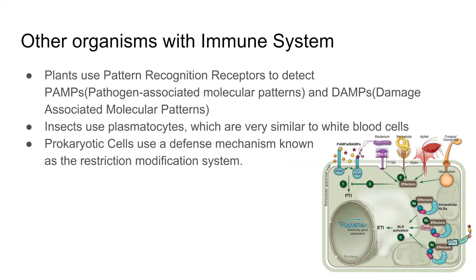Other organisms with immune systems: plants use pattern recognition receptors to detect PAMPs, or pathogen-associated molecular patterns, and DAMPs, or damage-associated molecular patterns. Insects use plasmatocytes, which are very similar to white blood cells. Bacteria use a defensive mechanism known as the restriction modification system.